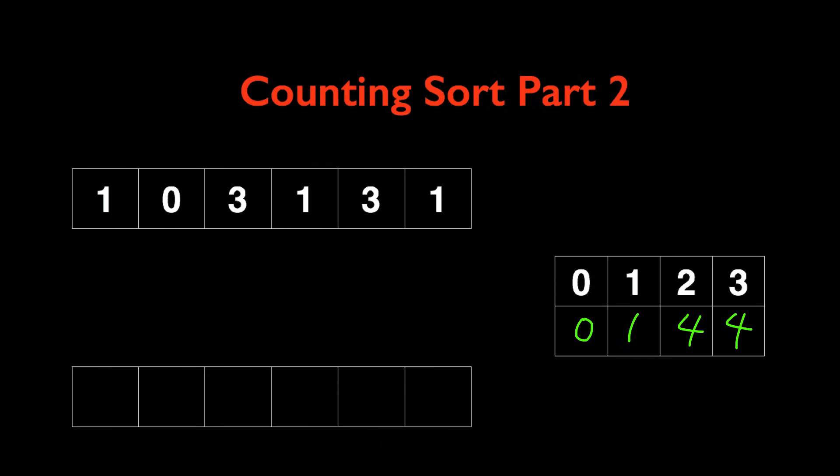Once we have the starting index for each number the rest is relatively easy. We're going to first initialize a new array that's the same length as the original array, so length 6 in this particular case, and then we're going to iterate through the original array one by one.